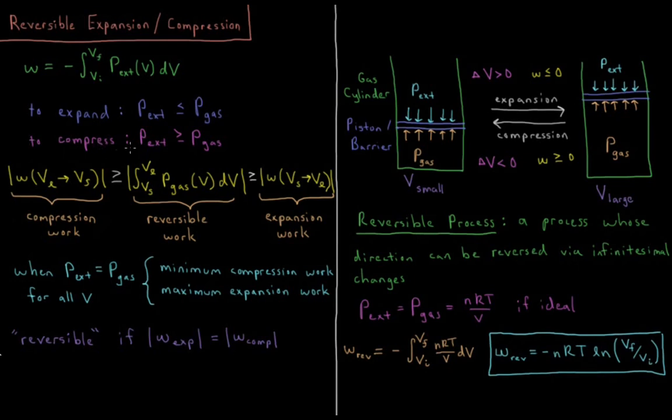Conversely, to compress the gas, we need our external pressure to be greater than or equal to the pressure of the gas, because if it's not, then there's no imbalance in forces that we can have for the gas to move that piston and compress our gas to a smaller volume.